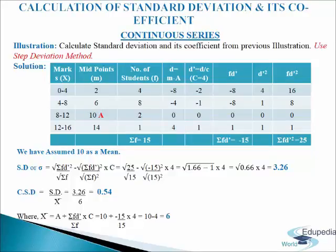Now come to the next column fd dash. We will multiply frequency with d dash. So 4 multiplied by minus 2 gives minus 8, 8 multiplied by minus 1 gives minus 8, 2 multiplied by 0 gives 0, 1 multiplied by 1 gives 1. We will calculate and get sigma fd dash equals to minus 15. Now come to the seventh column, d dash squared: minus 2 squared gives 4, minus 1 squared gives 1, 0 squared is 0, and 1 squared is 1.